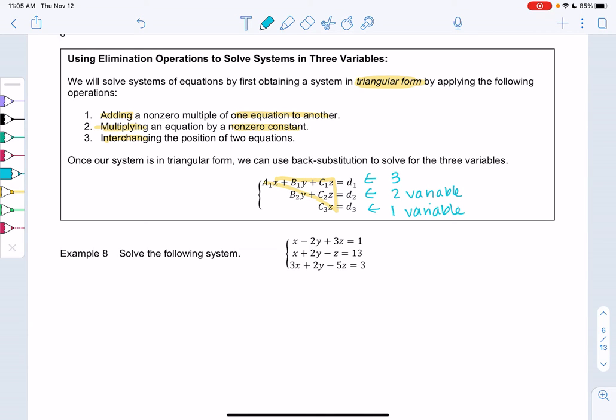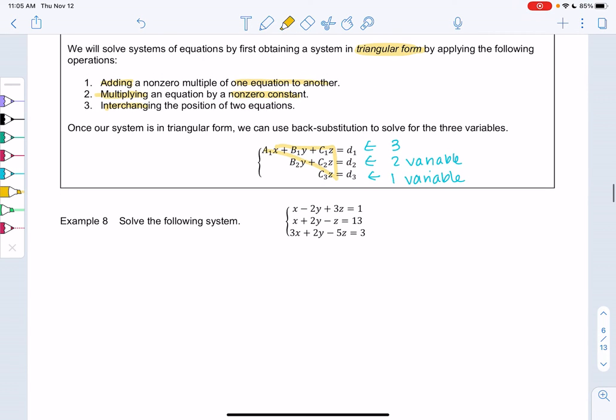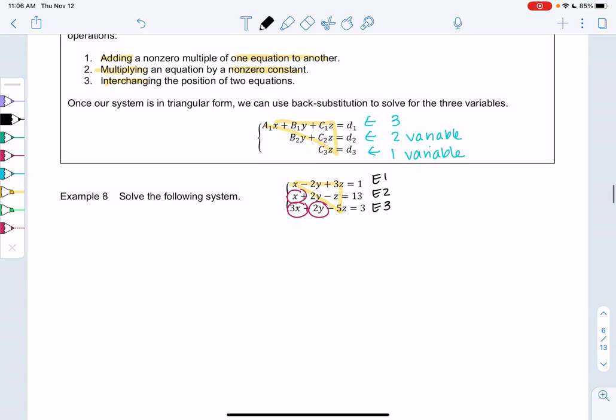So let's make a triangle in example eight. So I'm going to draw the triangle just so we can visually see the goal. So it looks like we need to get rid of x in the second equation, and we need to get rid of x and y in the third equation. So we'll do it in a couple steps, but we're going to try to remove those so that we can get a triangle. So I'm just going to label them E1, E2, and E3, just so you know what I'm talking about.